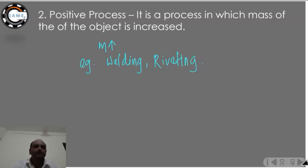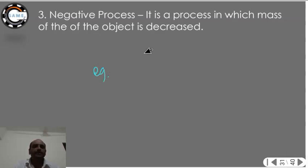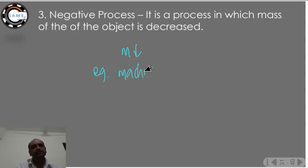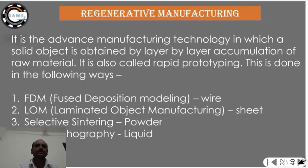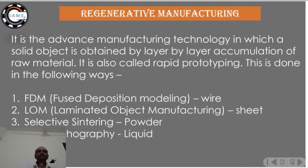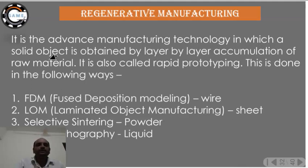In negative processes, the mass of the object decreases. An example is machining — in a turning operation, you are reducing the mass of the object. Before starting machining, we will look at regenerative manufacturing, which is an advanced manufacturing technology in which a solid object is obtained by layer-by-layer accumulation of raw material. It is also called rapid prototyping.